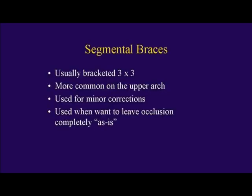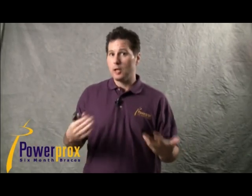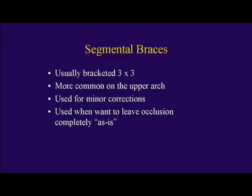When I treat a one-arch case, I generally treat them with segmental braces, generally only bracketing upper canine to canine or maybe first bicuspid to first bicuspid. Segmental cases are actually a little more common in the upper arch. The lower arch tends to have so many interferences that you can't move those teeth around as much. If there's no interference and there's room and some overjet to work with, you can do a lower case as well, bracketing three to three or four to four. We're generally making very minor corrections — rotations, in-and-out discrepancies, mild crowding cases.